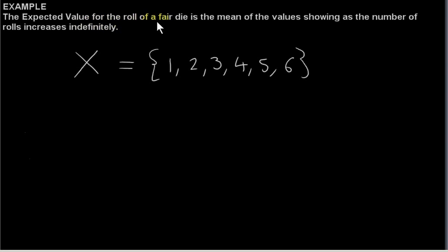The expected value for the roll of a fair die is the mean of the value showing as the number of rolls increases indefinitely.